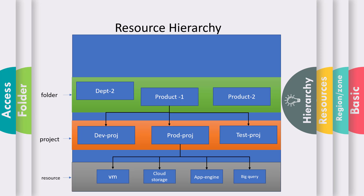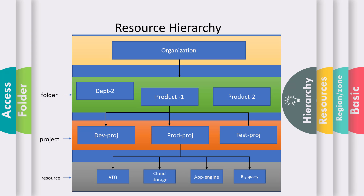If your GCP account is part of an organization, you can further segregate the hierarchy by having all your projects reside within particular folders. Multiple folders can each contain multiple projects. For example, one product of the organization can have a separate hierarchy with dev, prod, and test projects within it. Folders can also be segregated by departments, so the hierarchy goes: organization → folders → projects → resources.